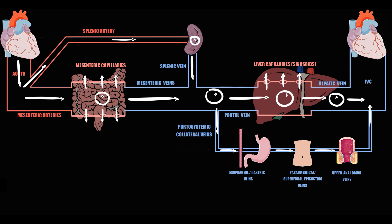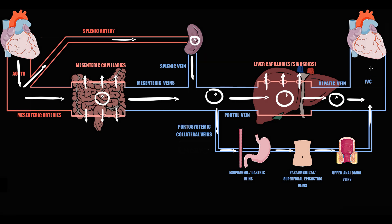An adult in normal conditions practically does not use portosystemic collateral vessels, because the adult has a portal vein main line that provides flow of a huge amount of blood. From the inferior vena cava, blood goes into the right atrium and right ventricle, then crosses pulmonary circulation into the left atrium and left ventricle, and from the left ventricle the heart again pushes blood into the aorta, so this cycle repeats.